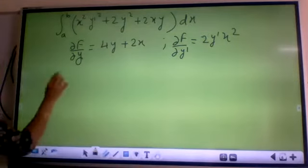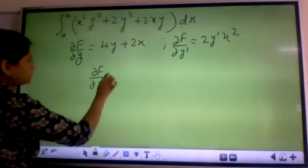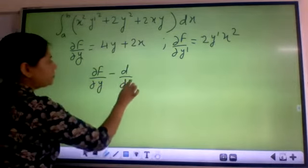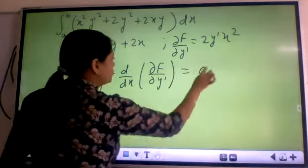Now what is my Euler's equation? My Euler's equation is ∂f/∂y minus d/dx of ∂f/∂y' is equal to 0.